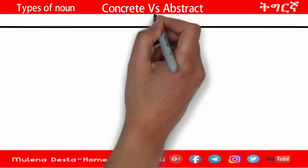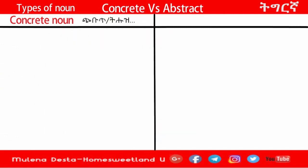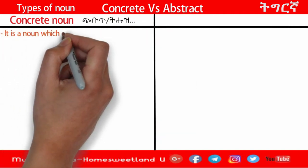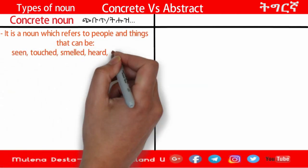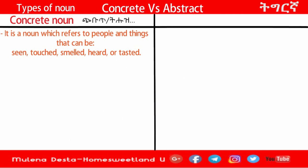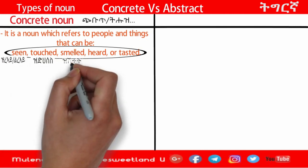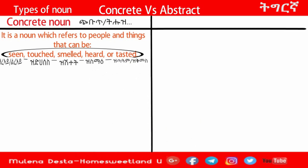So what is a concrete noun? It is a noun which refers to people and things that can be seen, touched, smelled, heard, or tasted. Those are concrete nouns.